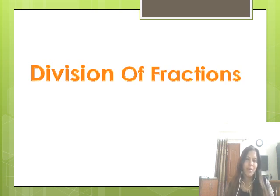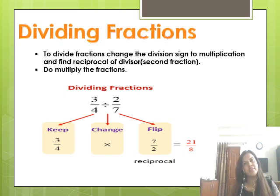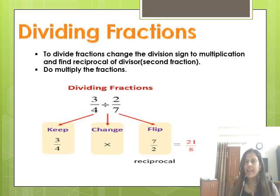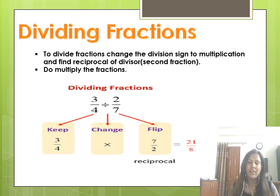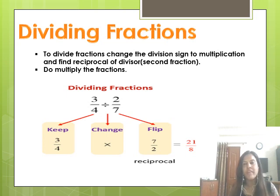Now moving on to the next topic: division of fractions. It's very simple. Whenever you're dividing fractions, change the division sign to a multiplication sign. And wherever you change the division sign to multiplication, you need to find the reciprocal of the fraction after the division sign. Reciprocal means flip over — for example, the reciprocal of 2-seventh is 7 upon 2: the numerator goes to the denominator and the denominator becomes the numerator.